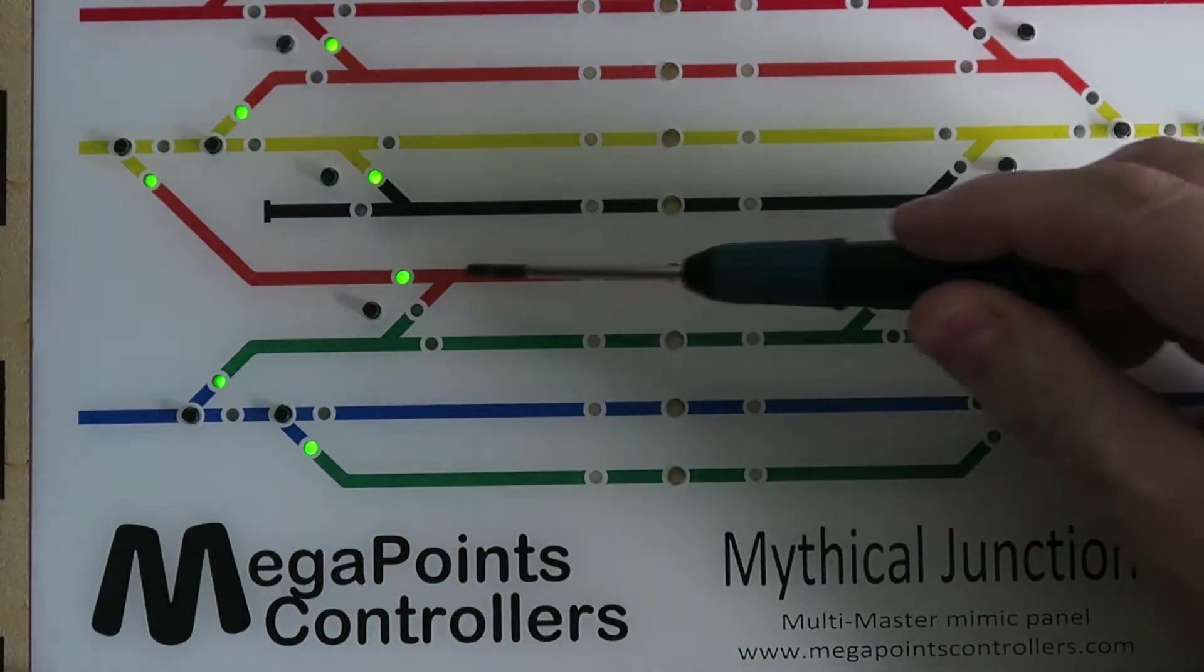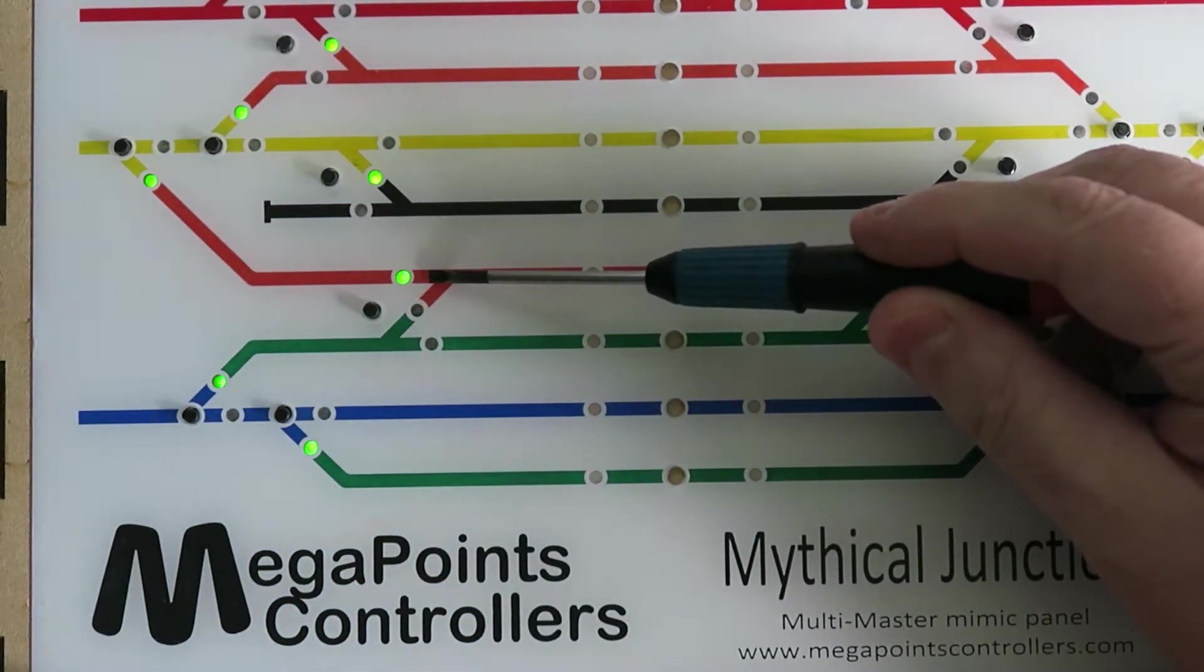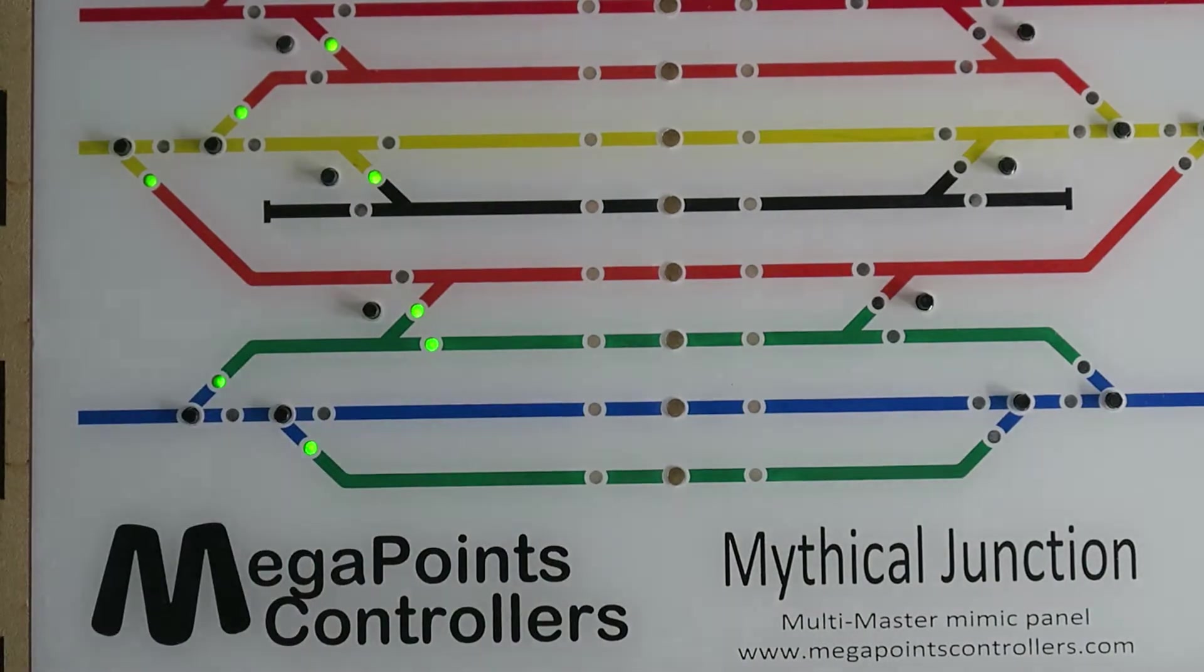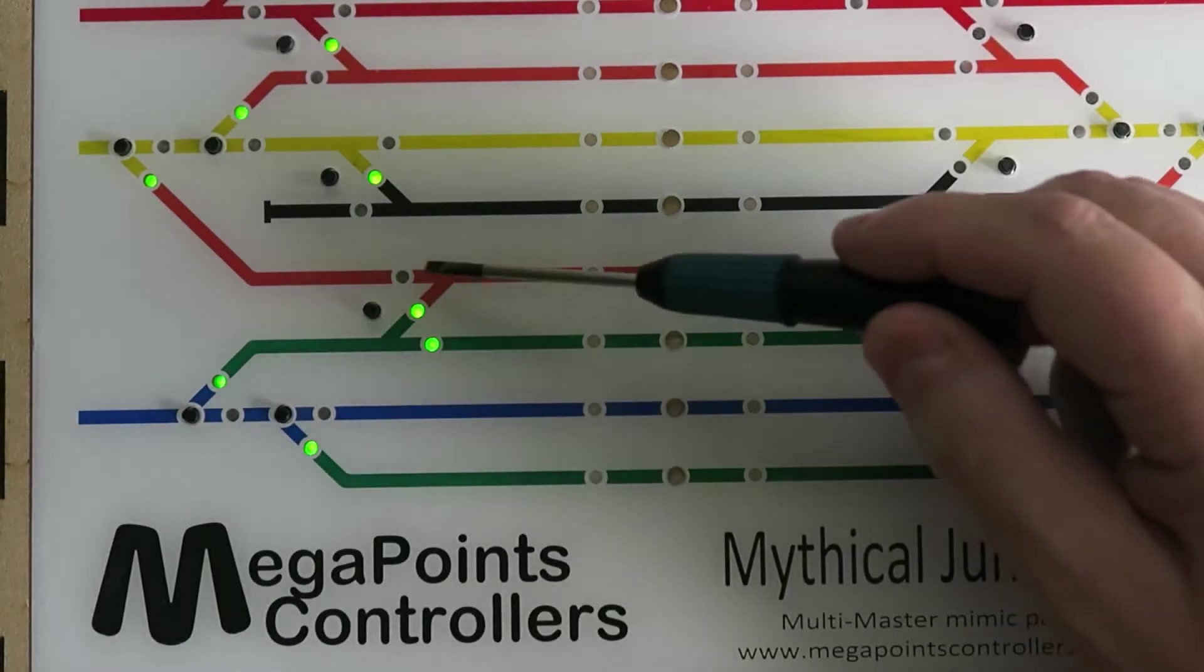But what would you do if you saw this? You have a crossover illuminated, the other two off, and when you press the button, this strange pattern occurs. Now these two are on, those two are off.